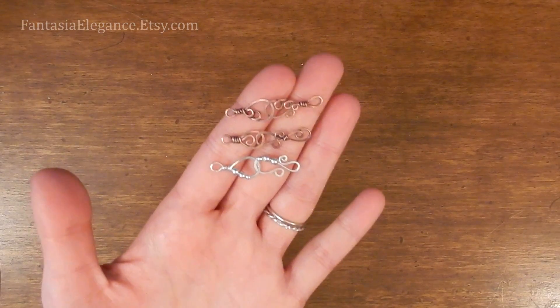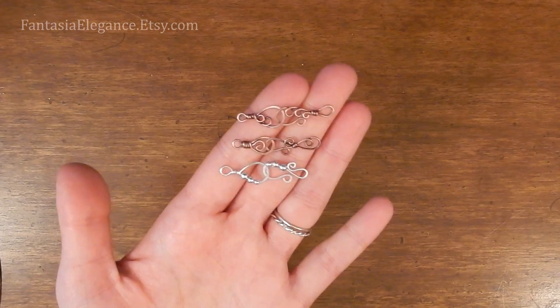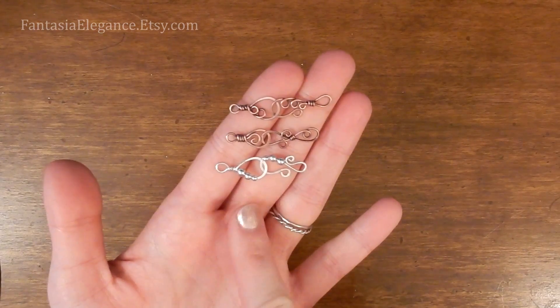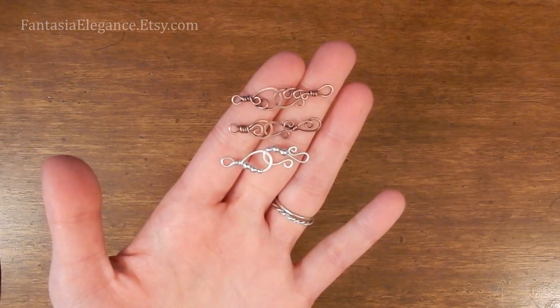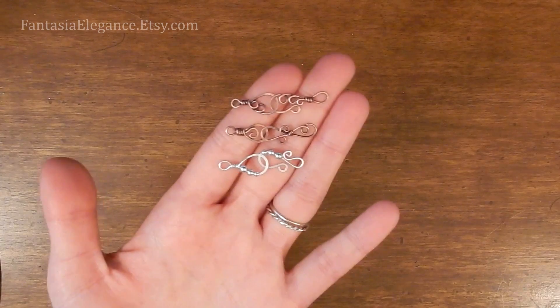Hey guys, Jocelyn here with Fantasia Elegance. In this video I'm going to be showing you how to make three different styles of fancy decorative hook clasps and their matching loop ends. These are a really great way to add some fancy flair to your wire wrapped pendants and bracelets.